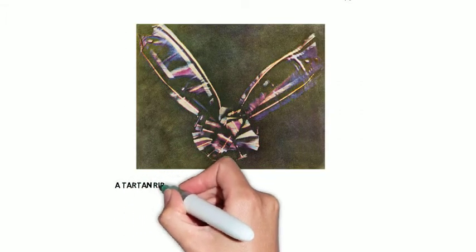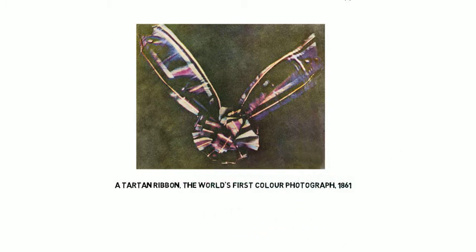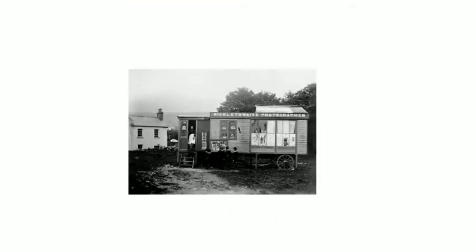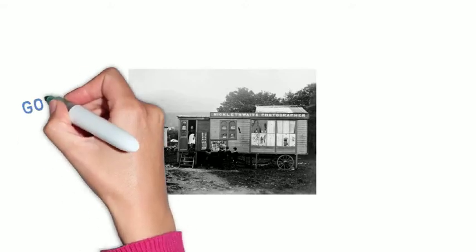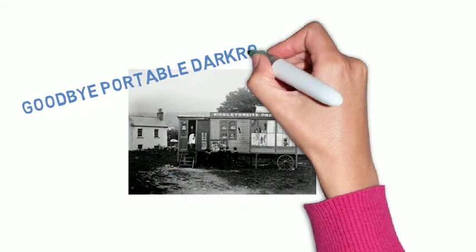Then in 1861, the first color photo was created, and in 1871, the invention of the gelatin dry plate process meant negatives didn't need to be developed immediately, and portable dark rooms became a thing of the past.